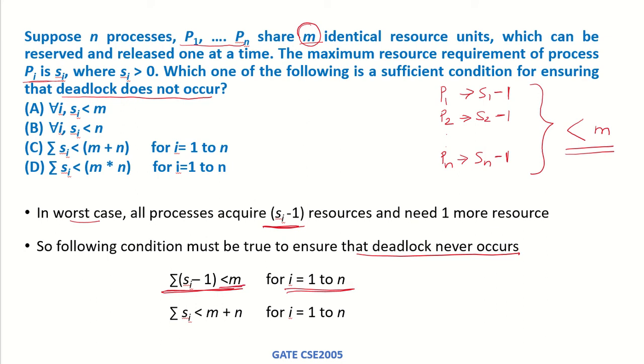If it is less than m, even if it is 1 less than m, that one extra resource can be given to any of these processes. That process can execute and exit, release its resources, and then the other processes can subsequently take those resources and finish their execution.